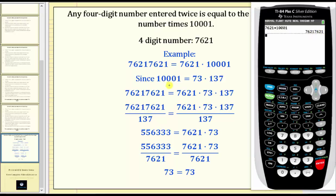And since 10001 equals 73 times 137, which we can also verify on the calculator, we can express the eight-digit number, which is a four-digit number entered twice as the original four-digit number times 73 times 137.